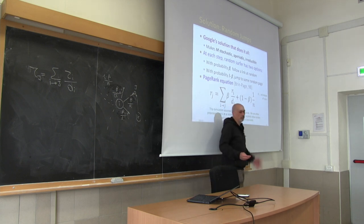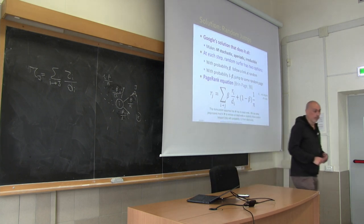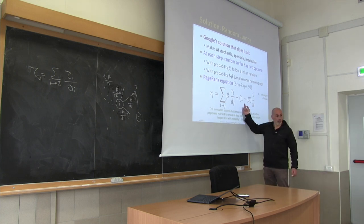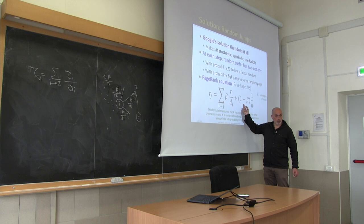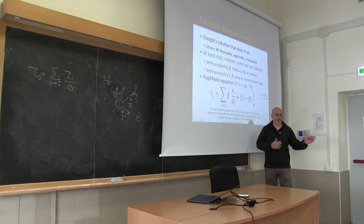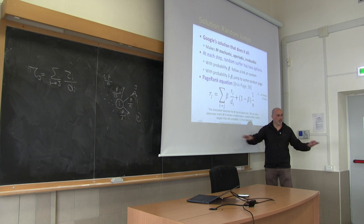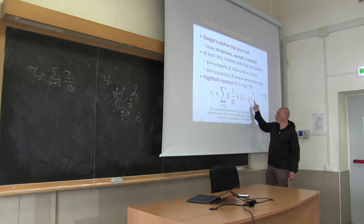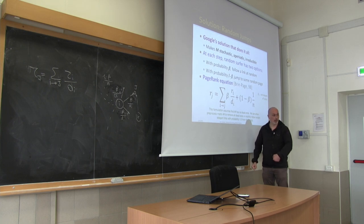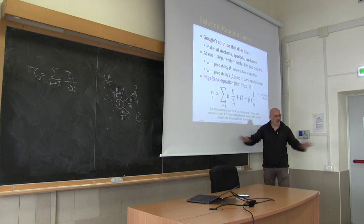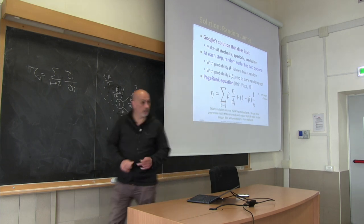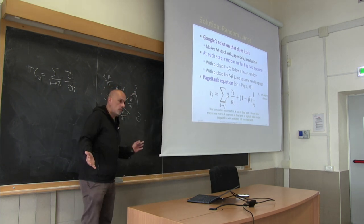Also, why random jumps? In this way, whenever you decide to jump, you are not favoring any vertex with respect to the others — you treat them equally. That is also the reason why whenever you jump, you can even jump on the same node you are at, giving every node the same importance.